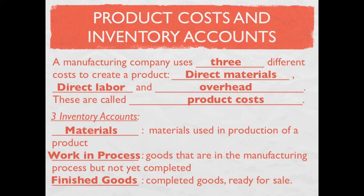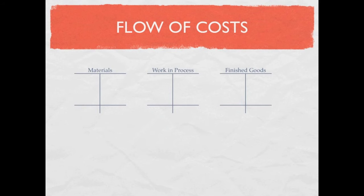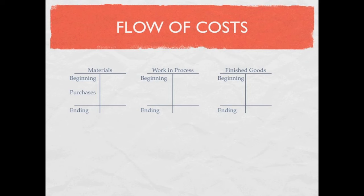To give us a visual idea of this concept, let's look at the flow of cost using our three inventory accounts in the form of T-accounts to see how costs flow from one to the other. These are inventory accounts with a normal debit balance, so beginning and ending balances are debits. When we purchase materials, that's a debit to materials. When work in process needs materials, they requisition them — those used materials come out of materials inventory and go into work in process as direct materials.